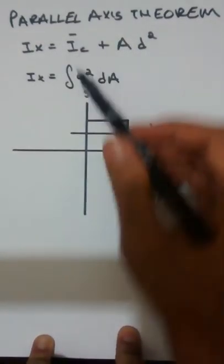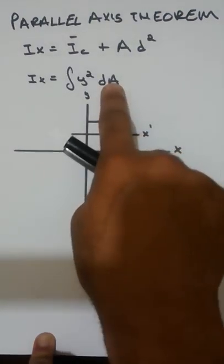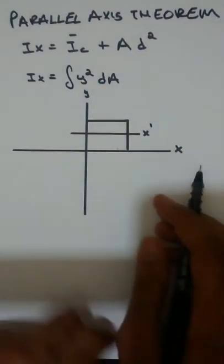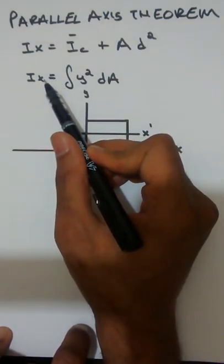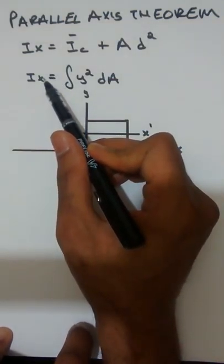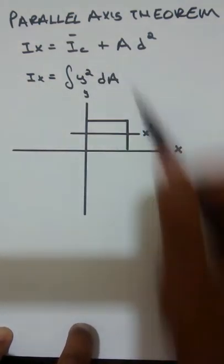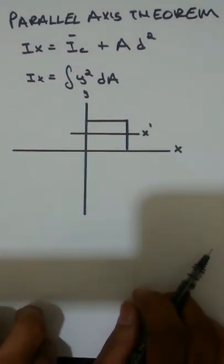I sub x is equal to the integral of y squared over dA, where dA is the area of the region. We want to calculate the area moment of inertia I sub x — the area moment of inertia about the x-axis. We solve the integral of y squared over dA, which will result in a double definite integral.